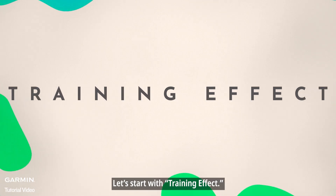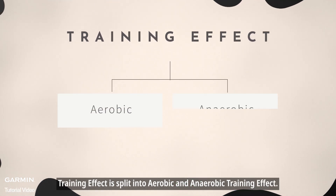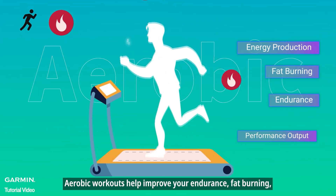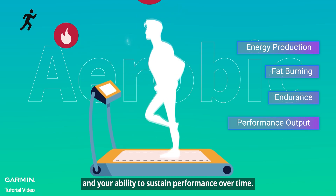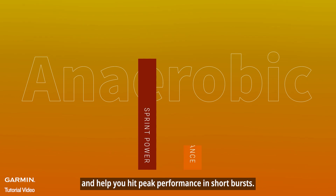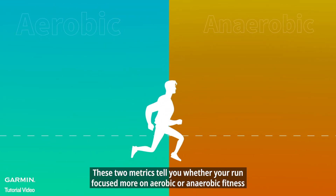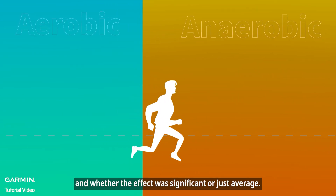Let's start with training effect. Training effect is split into aerobic and anaerobic training effect. Aerobic workouts help improve your endurance, fat burning, and your ability to sustain performance over time. Anaerobic workouts boost your sprint power, fatigue resistance, and help you hit peak performance in short bursts. These two metrics tell you whether your run focused more on aerobic or anaerobic fitness, and whether the effect was significant or just average.